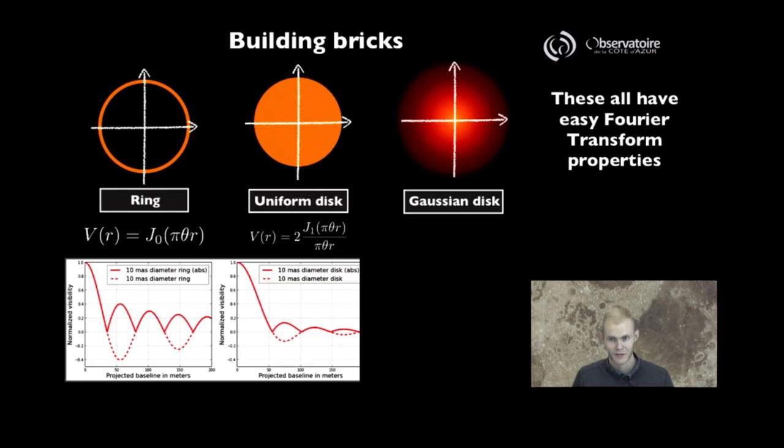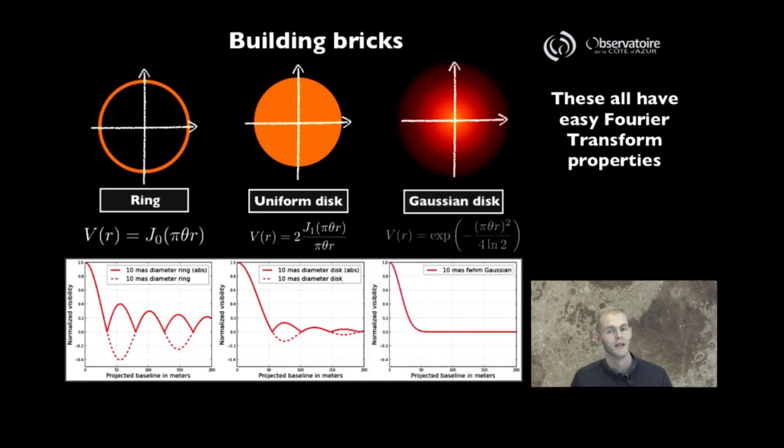The final example is that of the Gaussian disk. One very cool property about Gaussian distributions, and the reason we use it so much in this context, is because the Fourier transform of a Gaussian function is a Gaussian itself. Here you have the extreme case where you see almost no modulation at all, except in the first lobe of the visibility.